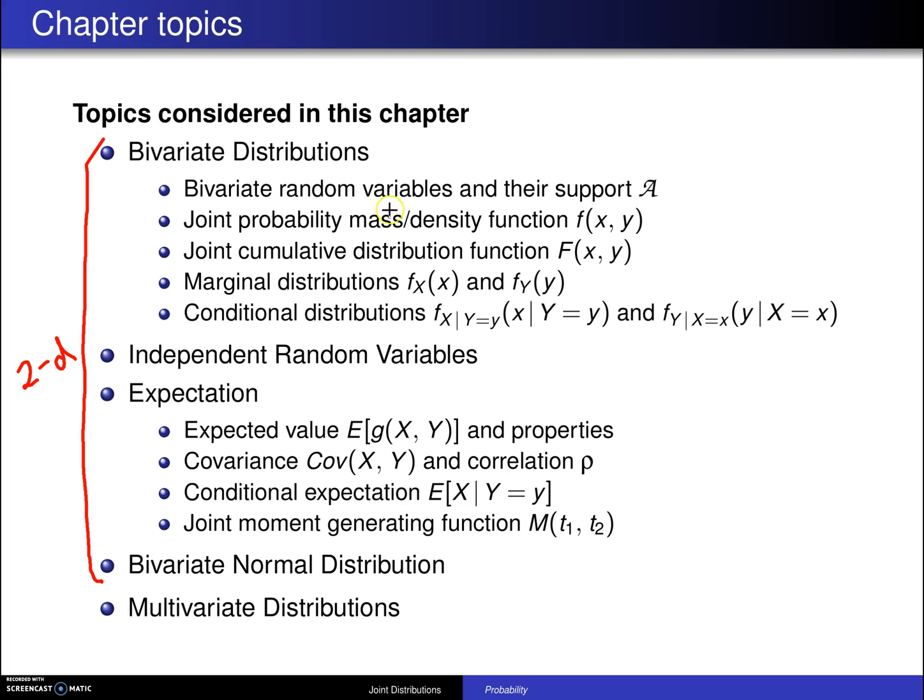The first topic is bivariate distributions. We'll look at the random variables and their support, their joint probability mass or density functions, little f. Their joint cumulative distribution functions, capital F. Their marginal distributions, and their conditional distributions.